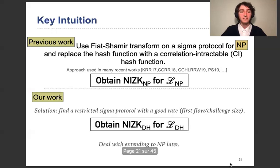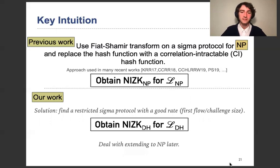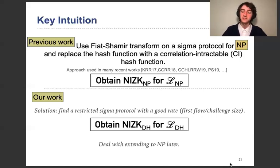Our idea is to get around this. Basically, what we do is look instead at restricted Sigma protocols that have nice good rates — a good ratio of first flow size over challenge size. We obtain a NIZK for this restricted language, and then deal with extending to NP using the VPRG approach.